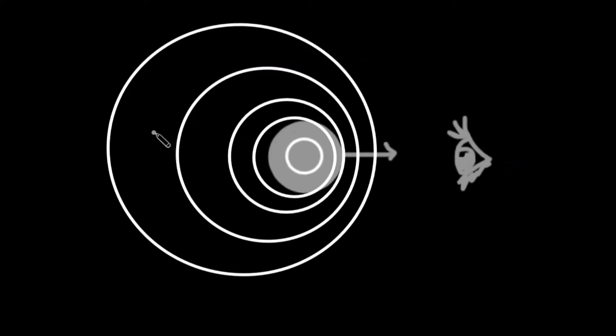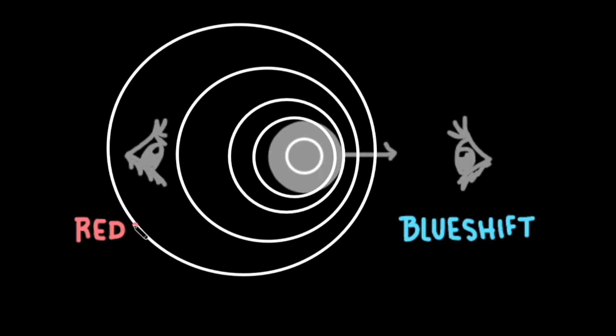The same increase and decrease in frequency happens with light waves. When a source moves towards an observer, its apparent frequency will increase. We call this blue-shifted because blue light has the highest frequency in the visible spectrum. When a source of light moves away from an observer, its apparent frequency will decrease. We call this red-shifted because red light has the lowest frequency in the visible spectrum. Why do we care?